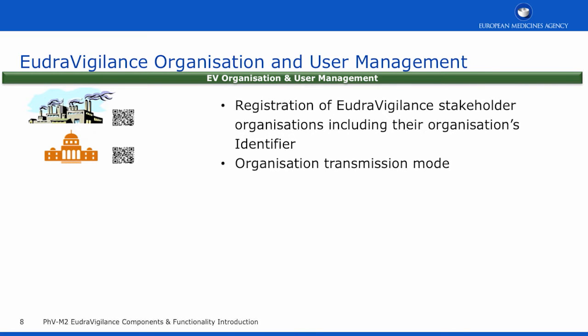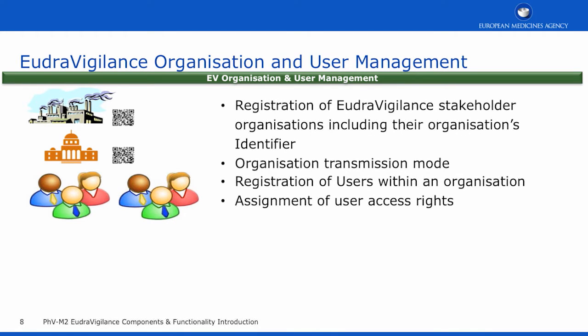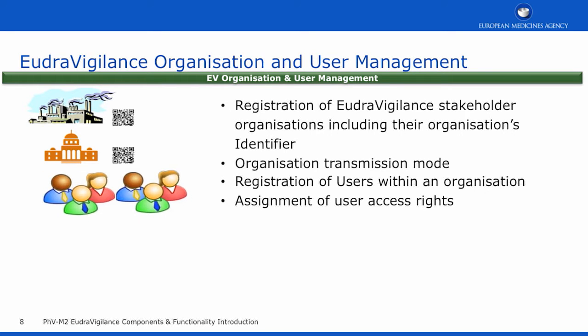The registration of stakeholder organisations and their users is carried out in the organisation and user management system. During the registration process, an organisation will assign their organisation to an organisation identifier and select their method of transmission. The methods of transmission available are to use a gateway, EV Post, or EV Web. Once the organisation is registered, the users within that organisation can then be registered and their access rights assigned.